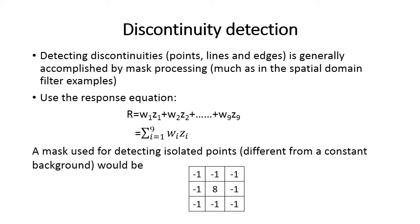Discontinuity detection says: detecting discontinuity points, lines, and edges is generally accomplished by mask processing. Mask processing uses the following equation which divides into weights and z-factors: w1·z1 + w2·z2 + w3·z3 and so on, which can be summarized as the summation of wi·zi from i to k, where k is the radial factor.